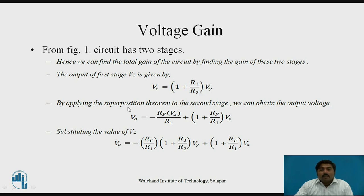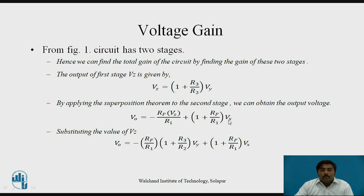By applying the superposition theorem to the second stage, which is the differential amplifier, we get: VO equals minus RF upon R1 into Vz, plus (1 plus RF upon R1) into Vx. Here RF is the feedback resistor, R1 is the input resistance, Vx is the input at the non-inverting terminal, and the negative term at the inverting terminal is why its sign is negative. Vz is the input voltage to the second stage.